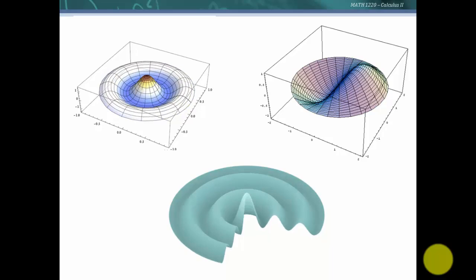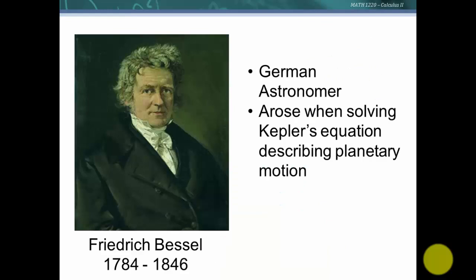These were named after Friedrich Bessel, who lived from 1784 to 1846, and he was a German astronomer. It was actually Daniel Bernoulli who first worked with these, but Bessel used them when solving Kepler's equation describing planetary motion, and he generalized the idea.